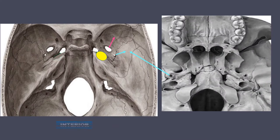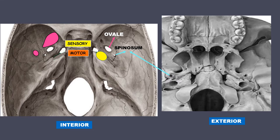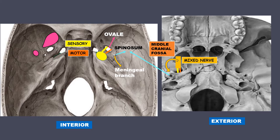Looking at the interior and exterior of the skull, you can remember the foramen ovale and the foramen spinosum like an exclamation mark. The sensory and motor roots pass out of the foramen ovale and come back again into the middle cranial fossa as a mixed nerve — out from ovale and into the spinosum — and this is the meningeal branch.